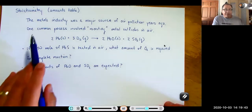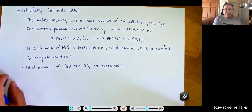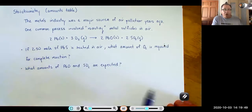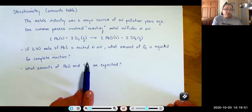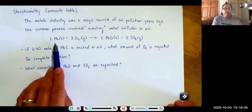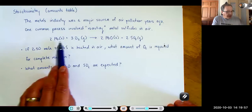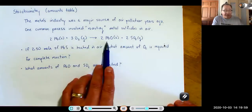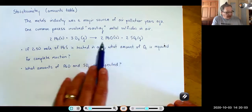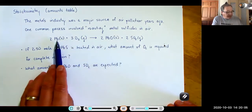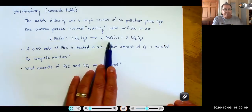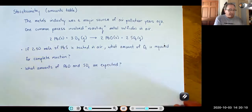Let's read through this problem. The metals industry was a major source of air pollution years ago. One common process involved roasting metal sulfides in air. Here you take lead 2 sulfide, react it with pure oxygen, and you get lead 2 oxide and sulfur dioxide. This is a redox reaction because we have pure lead in a compound on one side.